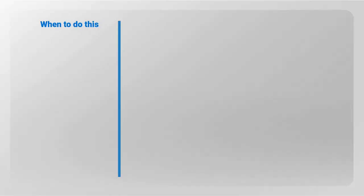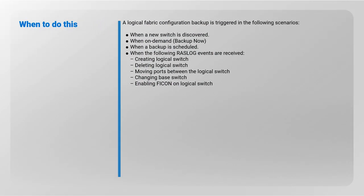A logical fabric configuration backup is triggered in the following scenarios: when a new switch is discovered, when on-demand backup now is selected, when a backup is scheduled, and when the following RASlog events are received — creating logical switch, deleting logical switch, moving ports between the logical switch, changing base switch, or enabling FICON on logical switch.